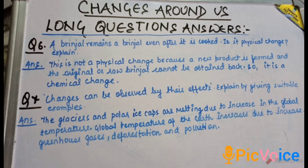Next question is: changes can be observed by their effect, explain by giving suitable examples. Yes, changes can be observed by their effect. Examples: the glaciers and the polar ice caps are melting due to increase in the global temperature of the earth.